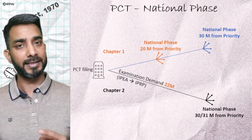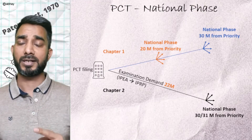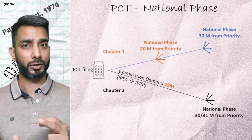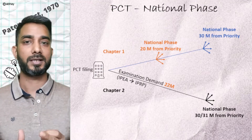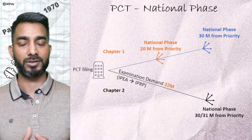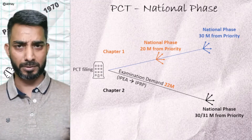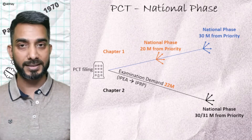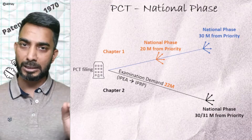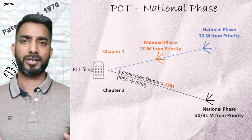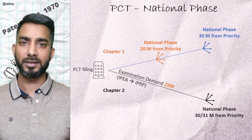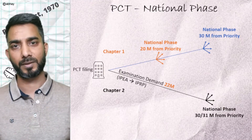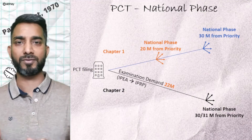In case the applicant is not filing a demand for examination through one of the IPEAs, the applicant needs to file the national phase application through Chapter 1 filing, meeting either the 20-month or 30-31 month deadline as per the respective countries. In Chapter 1 filing, the ISRs and written opinions generated by the ISAs are converted to a patentability report which can then be used by the member countries as they evaluate the invention — though it is not binding; it's up to them whether they want to use it.